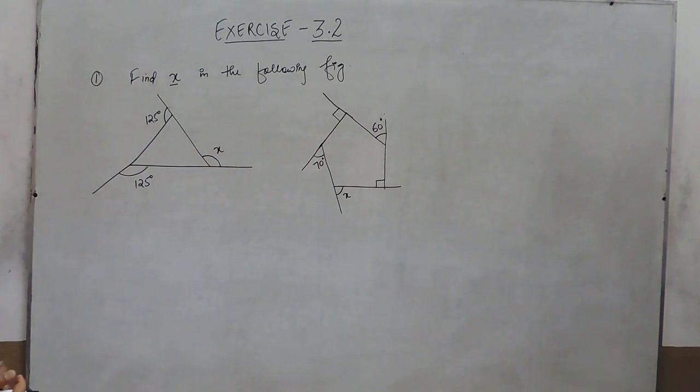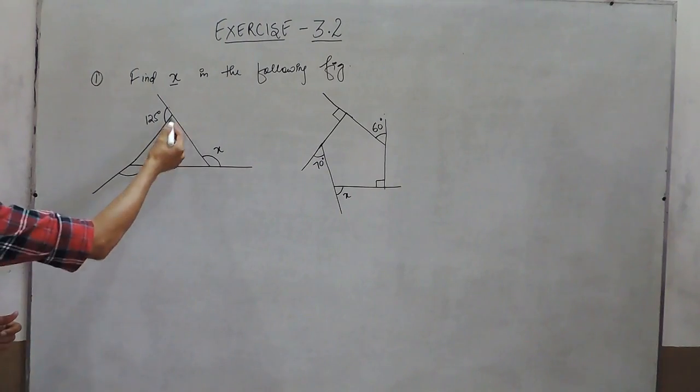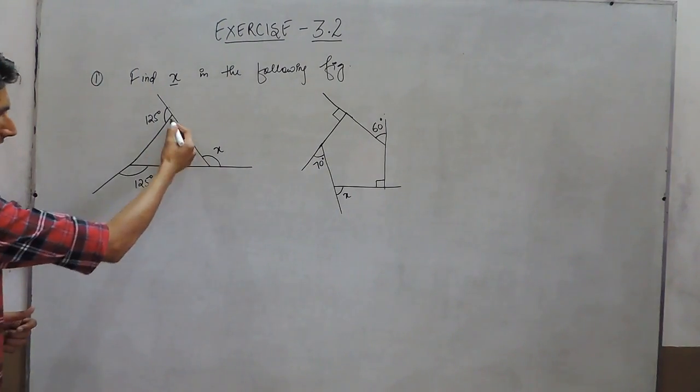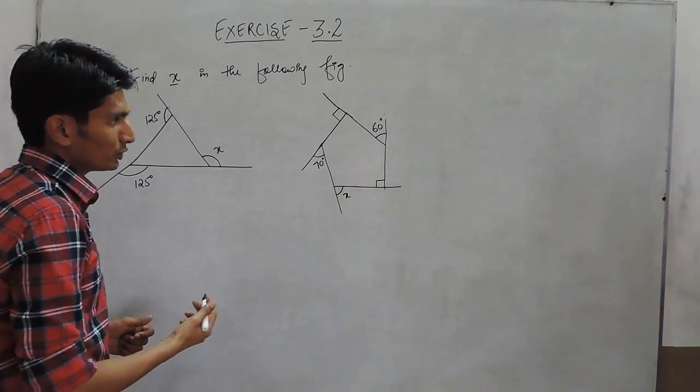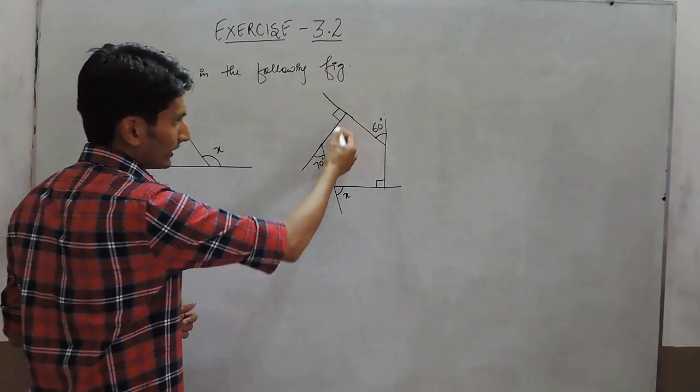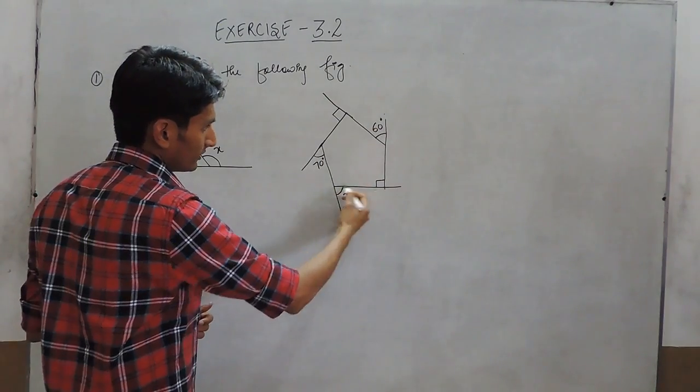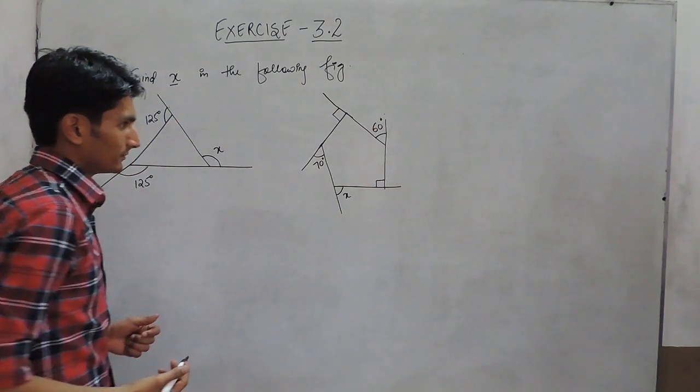In question number 4, you have to find the value of x in these two polygons. In the first case you are given a polygon with 3 sides, and in this figure you are given a polygon with 5 sides.